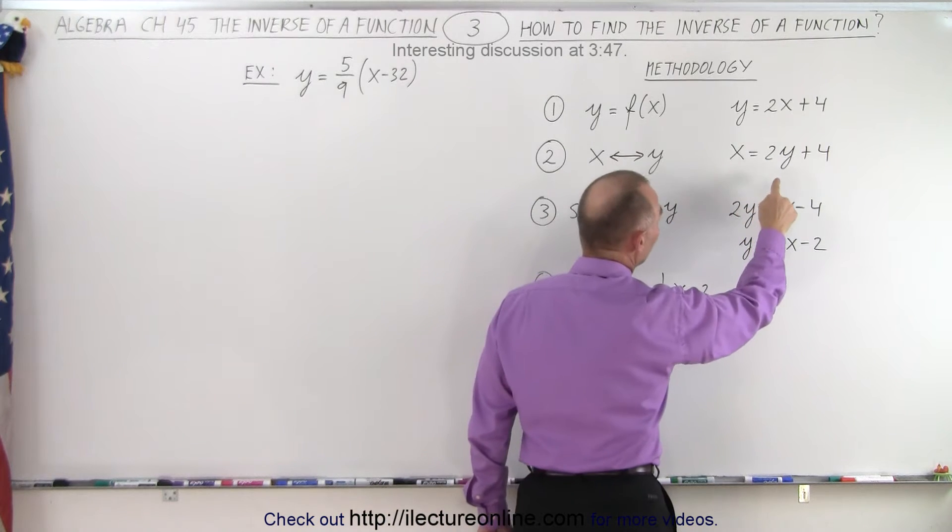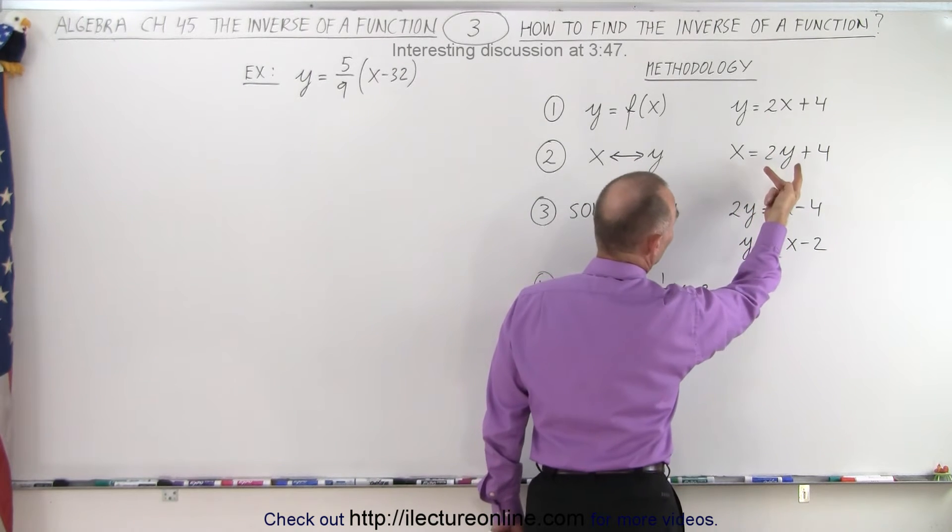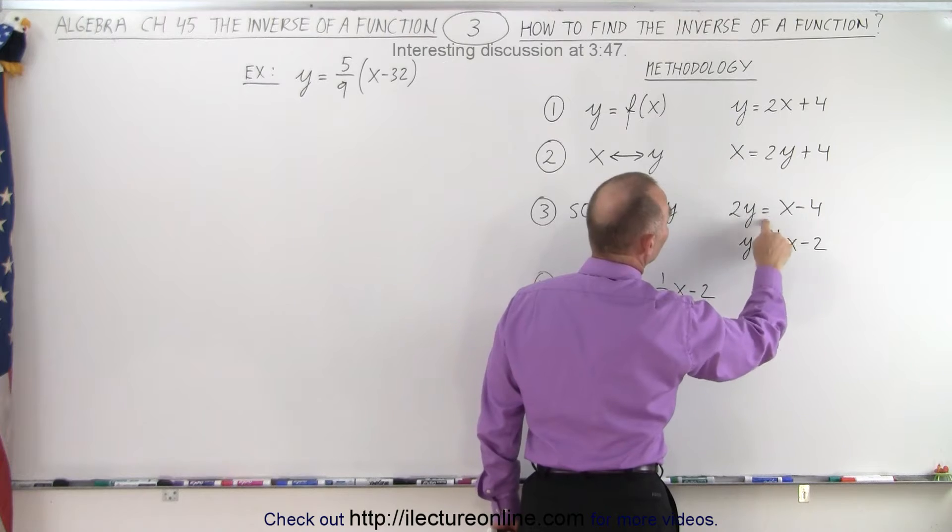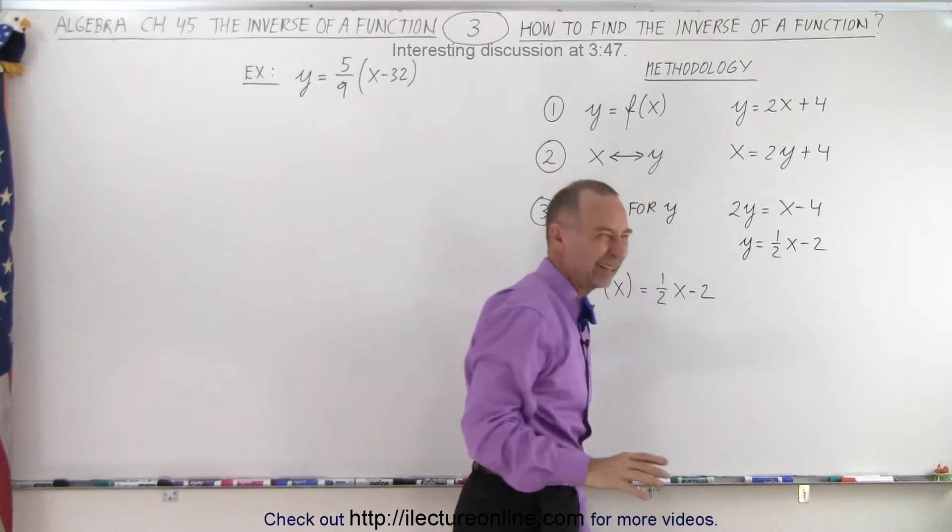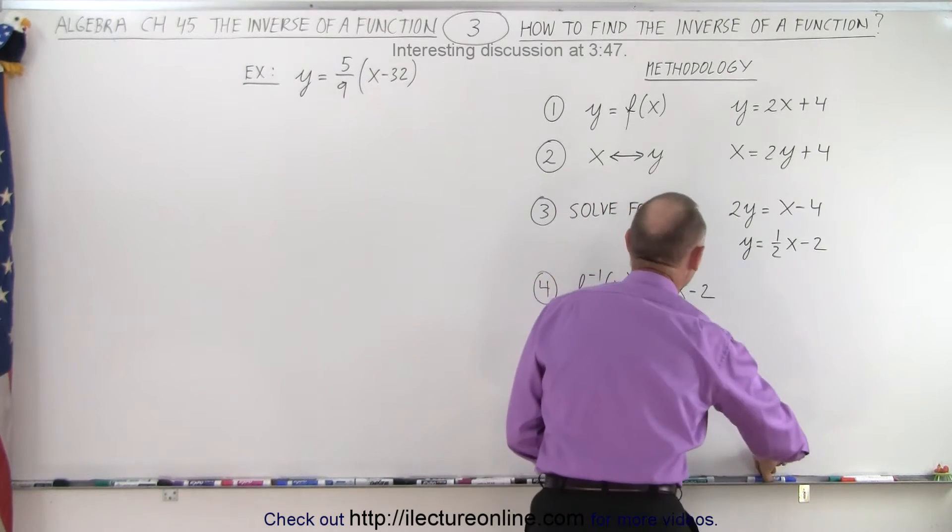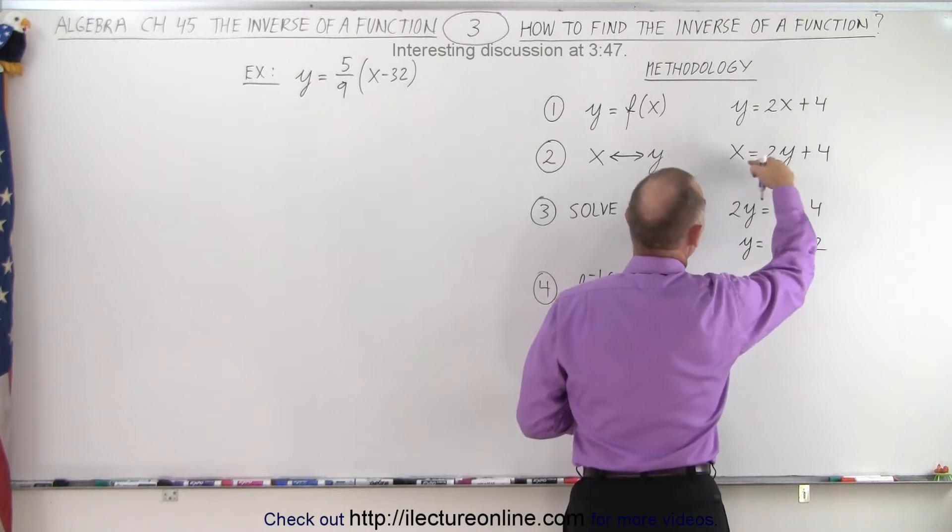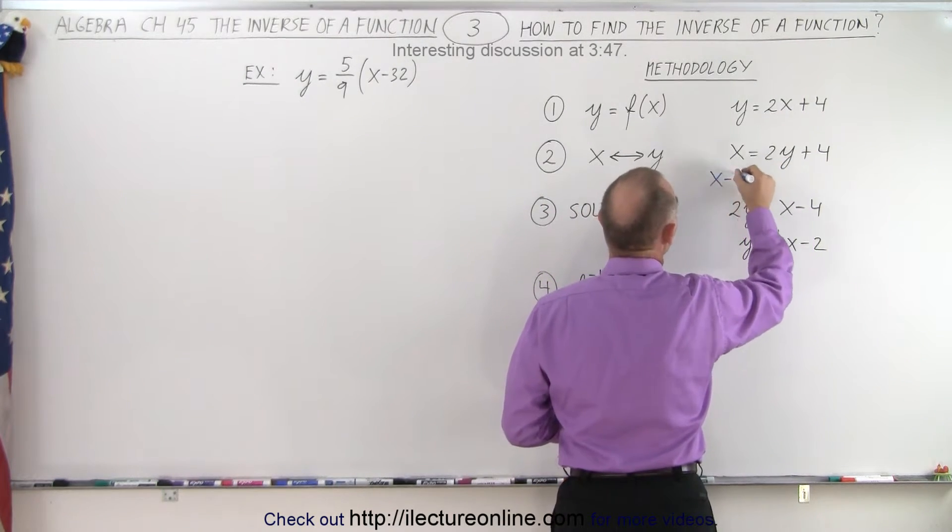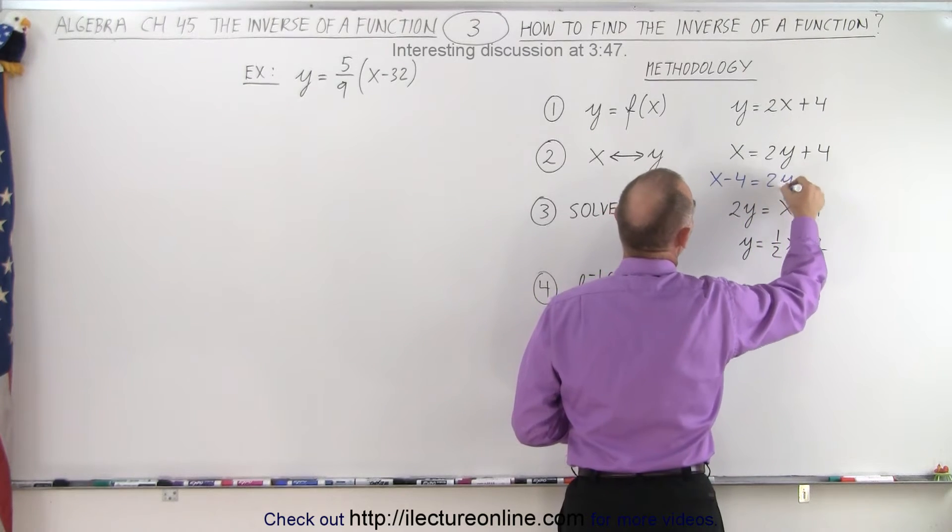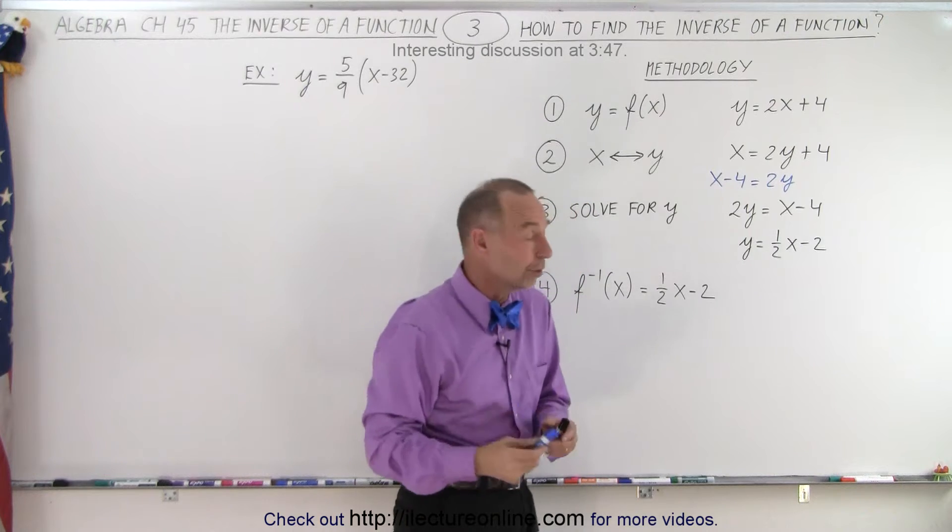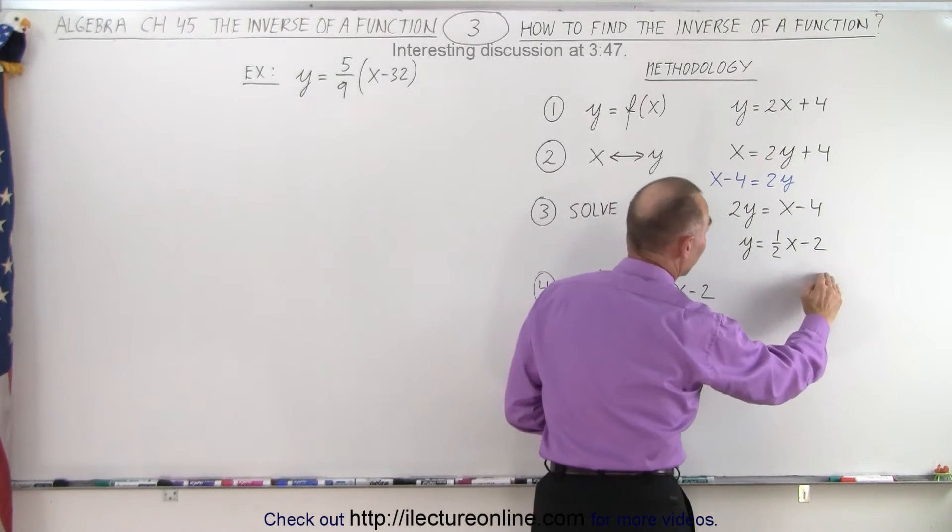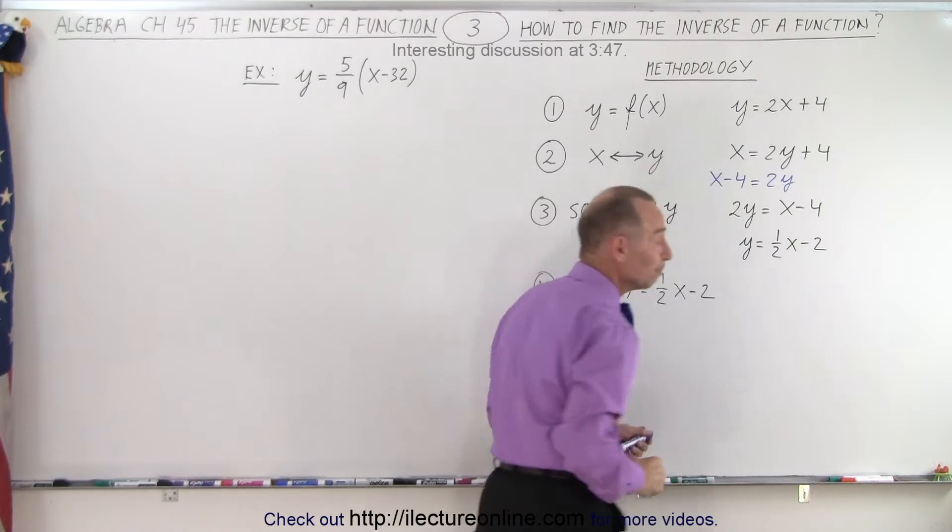So then what we do is we turn the equation around. So we end up with 2y is equal to x minus 4 because the 4 goes to the other side and becomes minus 4. Let me put one more intermediate step in there. So what I did was I brought the 4 to the other side. So we have x minus 4 equals 2y and then I simply turn the equation around 2y equals x minus 4 and then I divided both sides by 2 to get y equals 1 half x minus 2.